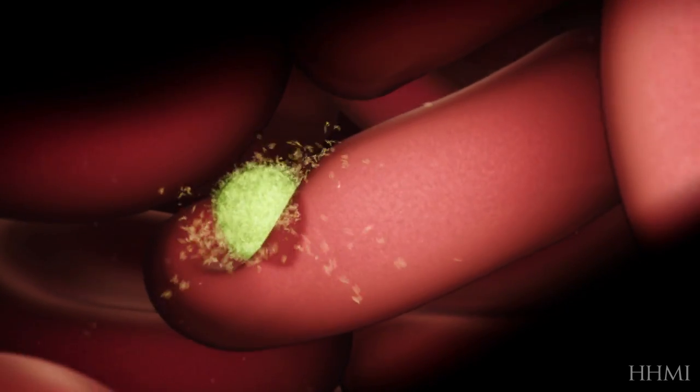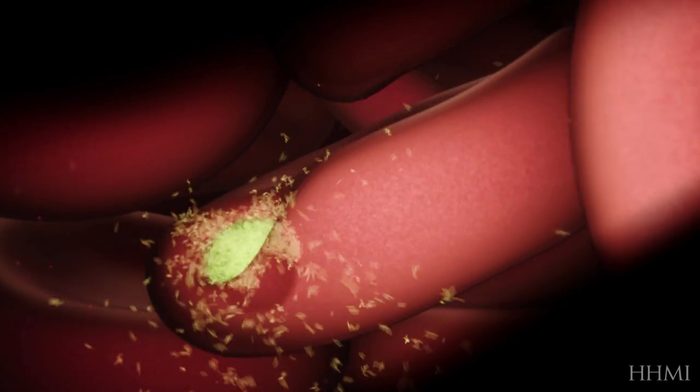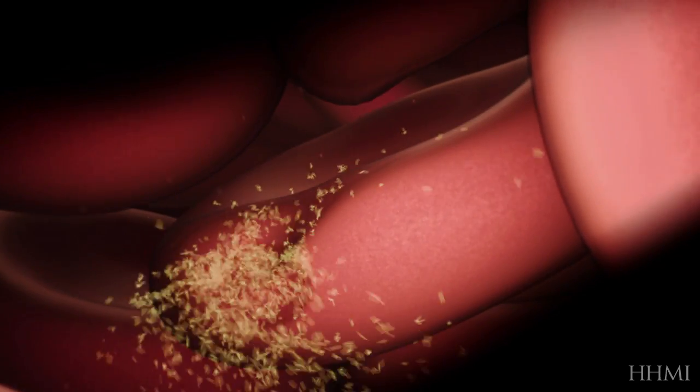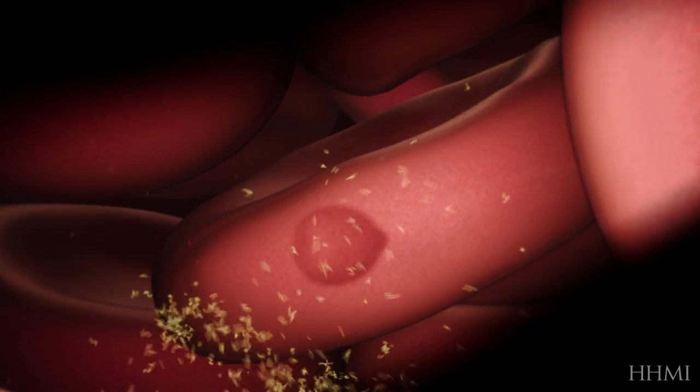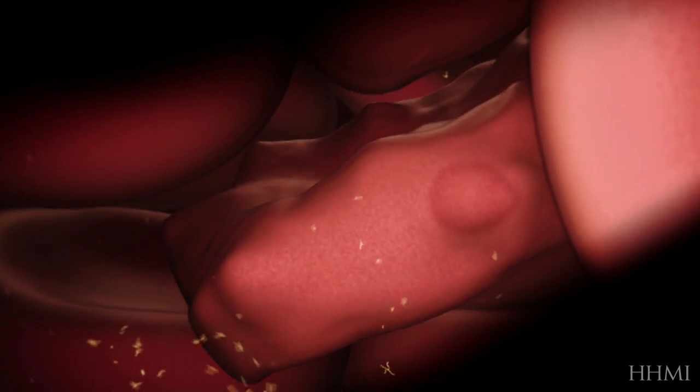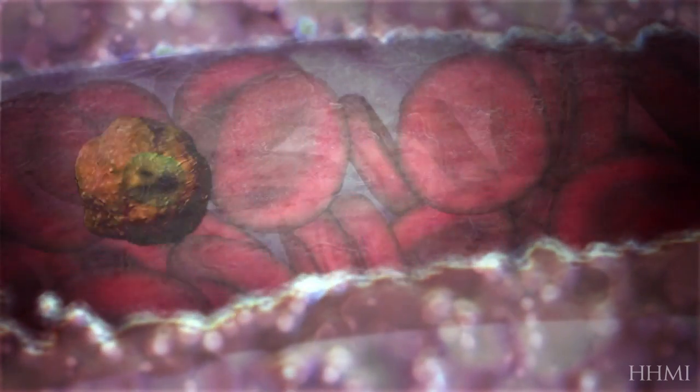Inside a red blood cell, the parasite can hide from the body's immune system. The parasite slowly devours the contents of the infected cell and creates more parasites.